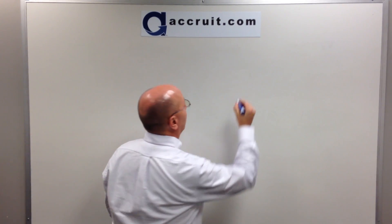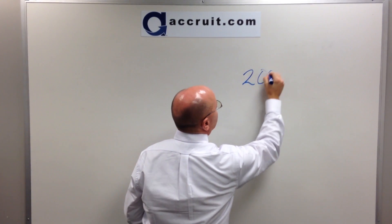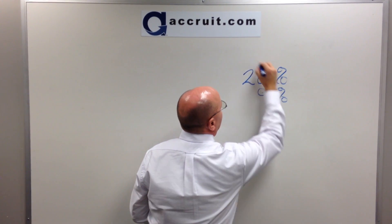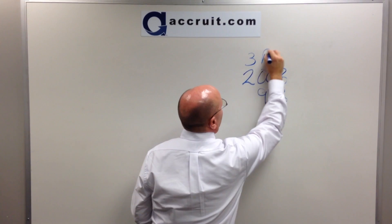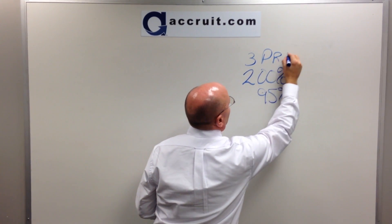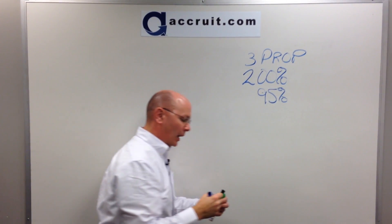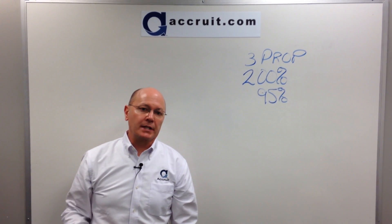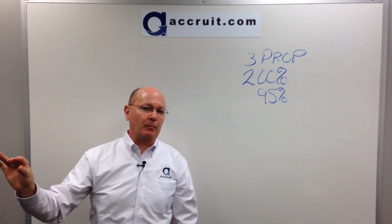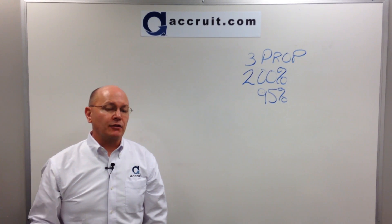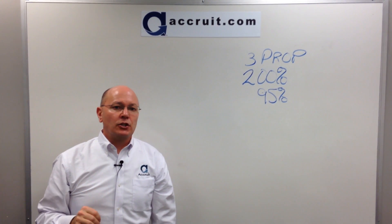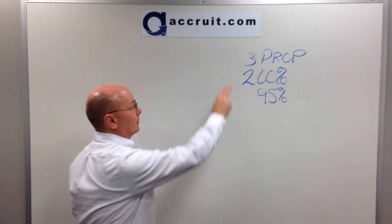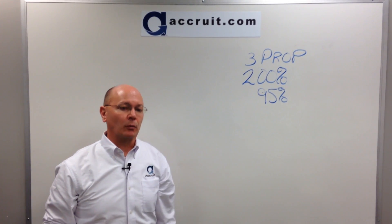Those three sub-rules are referred to as the 200% rule, the 95% rule, and the easiest of the three — the three property rule. For those beginning with 1031s: once you sell an investment property, the IRS gives you 45 days to identify up to three potential replacement properties, commonly referred to as the three property rule.